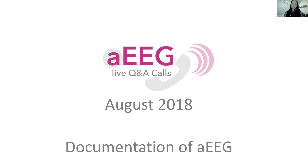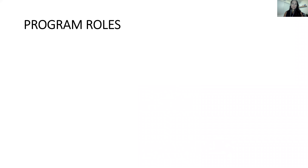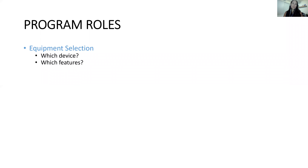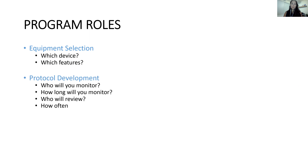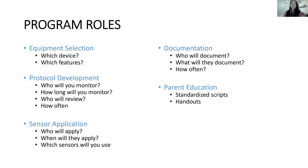Today we're going to talk about documentation because I feel like this is a big problem that we oftentimes encounter. When we talk about using AEEG in our NICU, it does take a village and there are many roles that we have to define — equipment and things that we need to add to our practice that weren't there before. Program roles include what equipment we'll use, who we'll monitor, when we'll monitor, protocol development, sensors, documentation, and parent education.